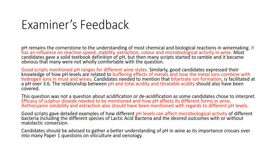Most candidates gave a solid textbook definition of pH, but many scripts started to ramble and it became obvious that many were not wholly comfortable with the question. Good scripts mentioned pH ranges for different wine styles. Good candidates expressed knowledge of how pH levels are related to buffering effects of metal and how metal ions combine with hydrogen ions in must and wine. Candidates needed to mention that bitartrate ion formation is facilitated at a pH over 3.6.